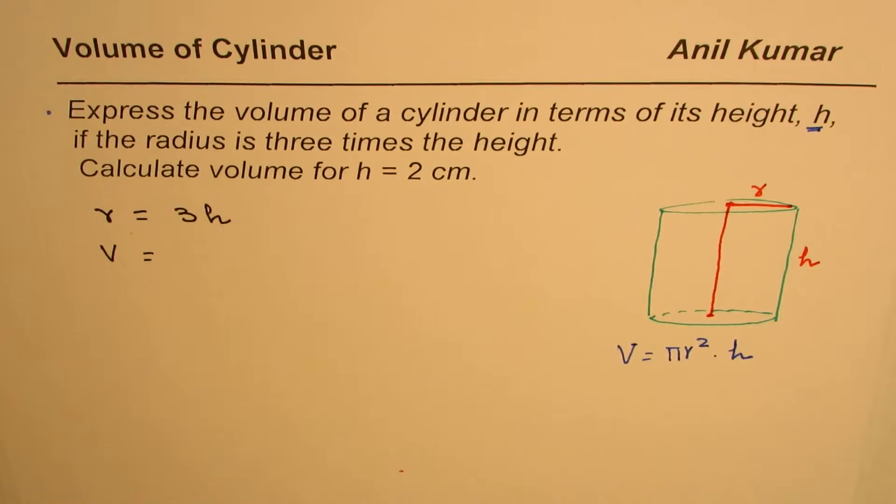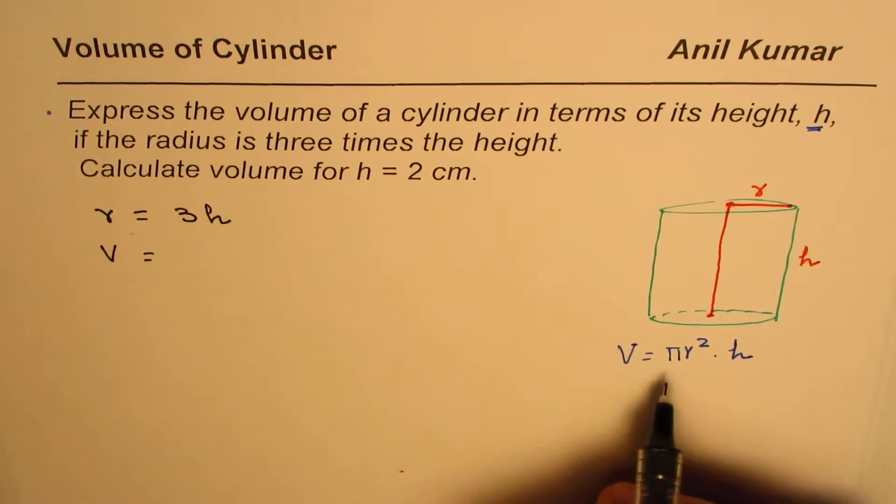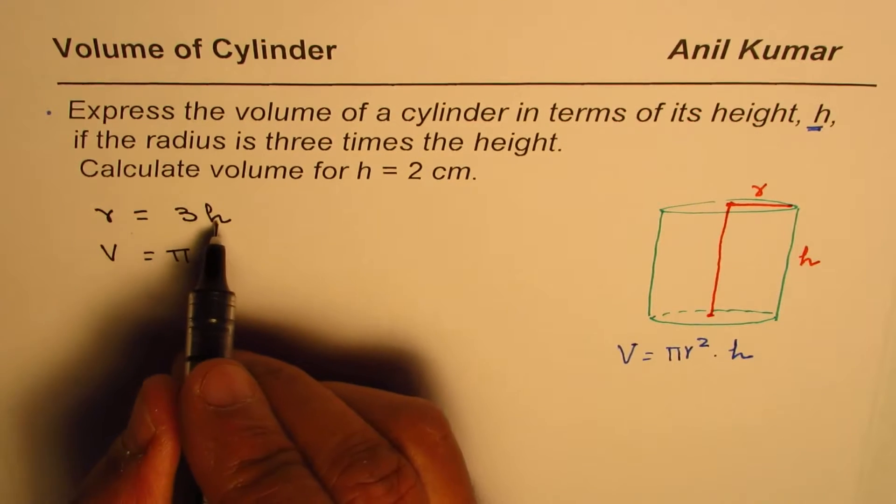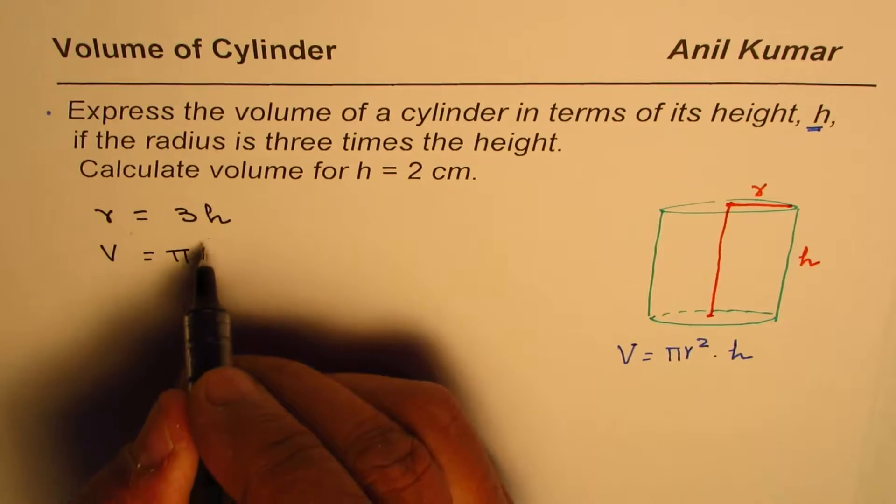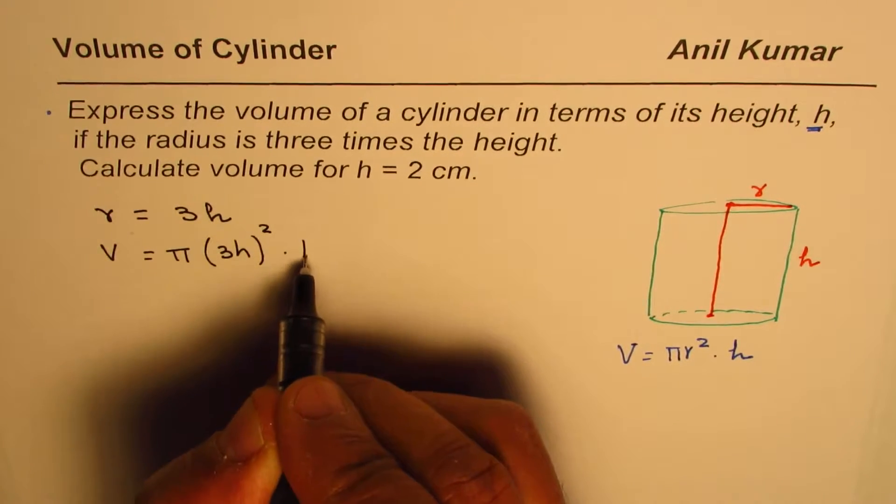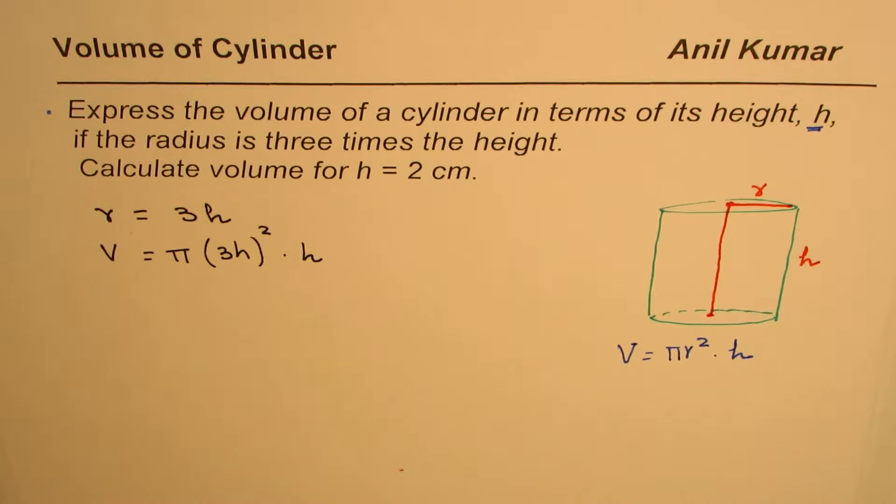So what we will do in this formula is we will write π as such. Instead of r, we will write 3h, since r is three times h. So we will write 3h. r² means (3h)² times h. So that is how you can write a formula only in one variable if additional information is given to you.